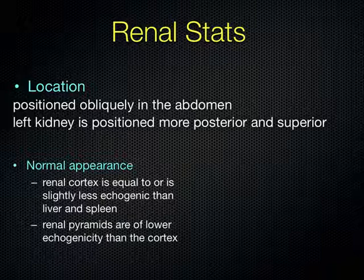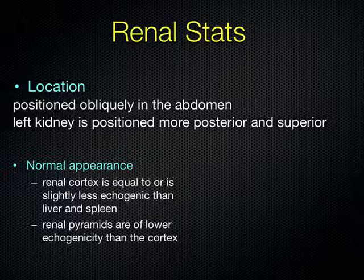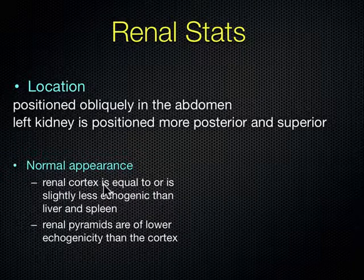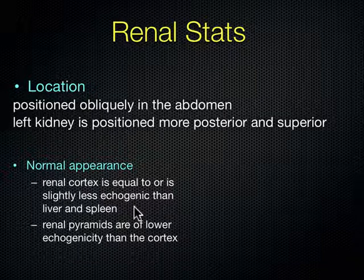The kidneys are located obliquely in the abdomen. The left kidney is more posterior and more superior — the way I remember that is the left kidney is more towards the head and more towards the bed. The renal cortex is less echogenic than the liver or the spleen, and the renal pyramids, because they're filled with urine, are less echogenic than the cortex. So the liver and spleen are brighter than the kidney's cortex, but the cortex is brighter than the renal pyramids.